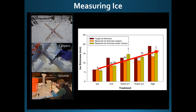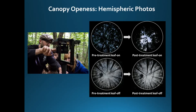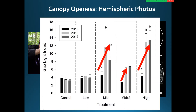A few key results. First of course was ice. We measured ice using wooden ornaments suspended in the trees. In this graph, the dark maroon bar on the left is the target ice and the two bars to the right are the measured ice with two different methods. Overall, we were able to create a suite of low, medium, and high ice treatments. We also evaluated canopy openness with hemispheric photos during leaf-on and leaf-off periods, and you can see the increase in canopy openness in both seasons.